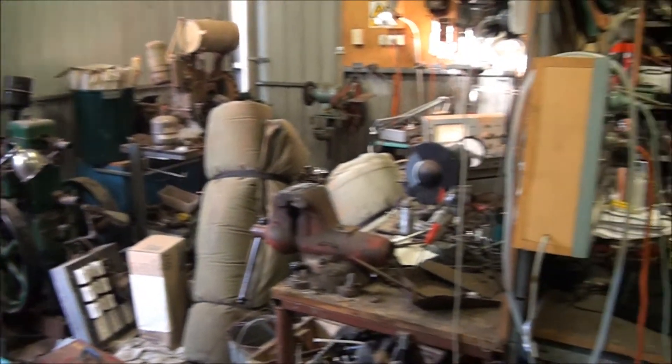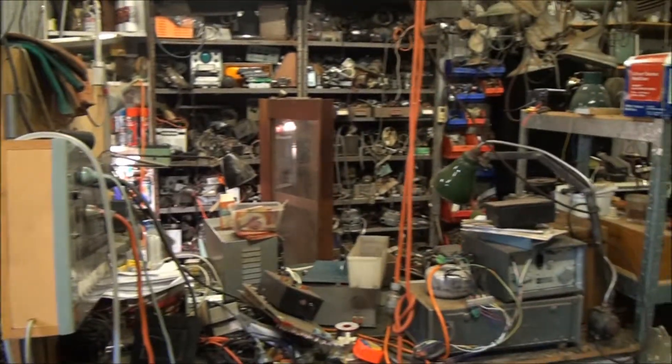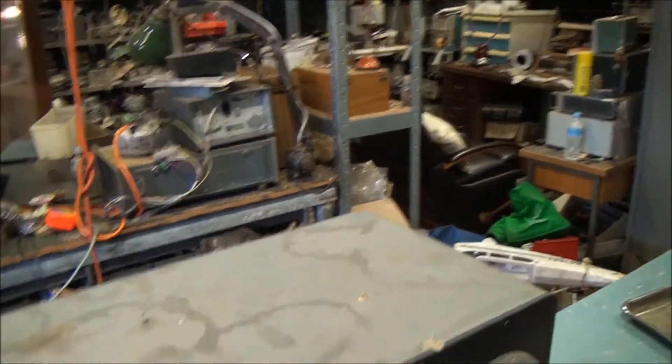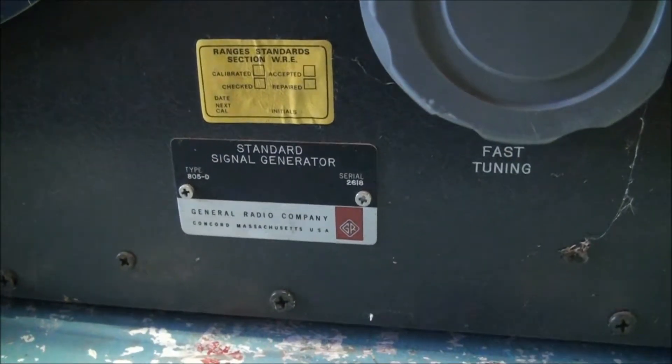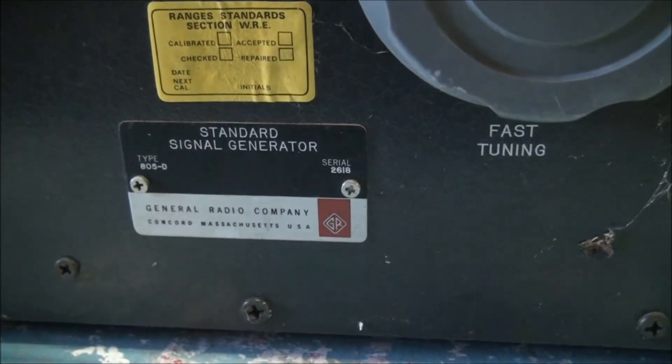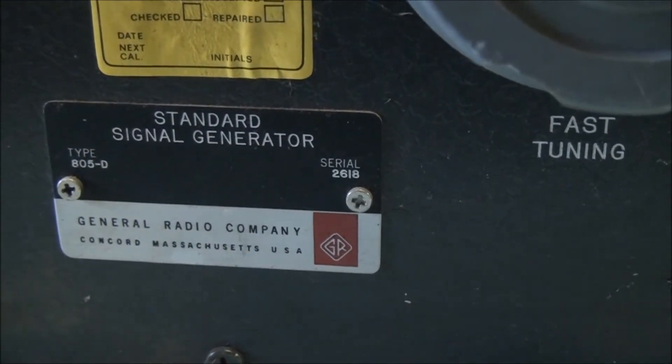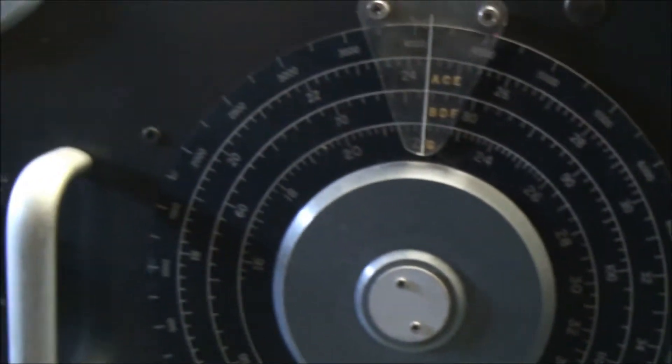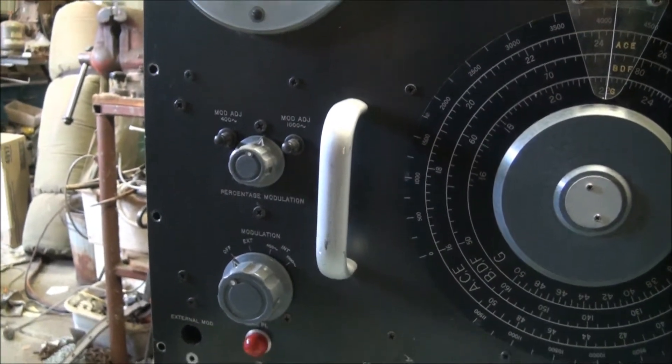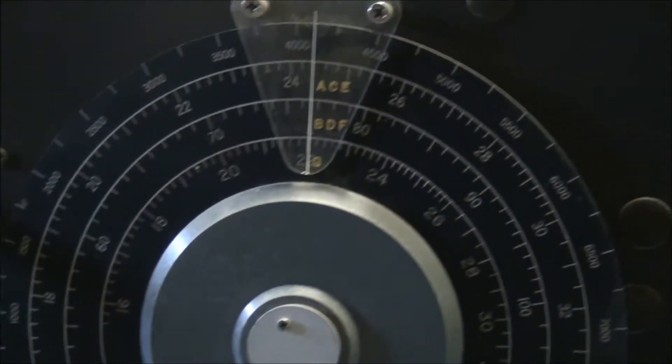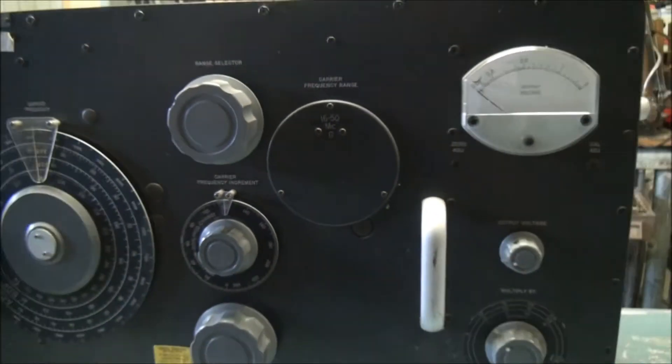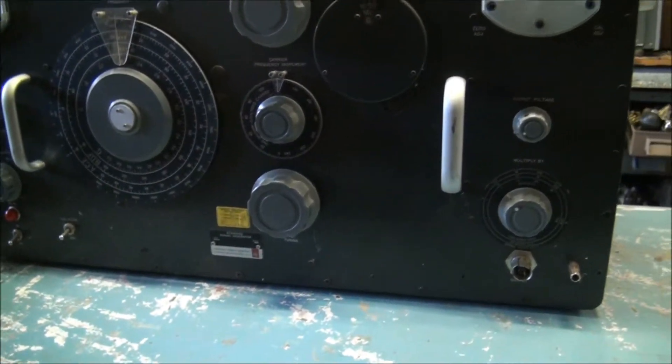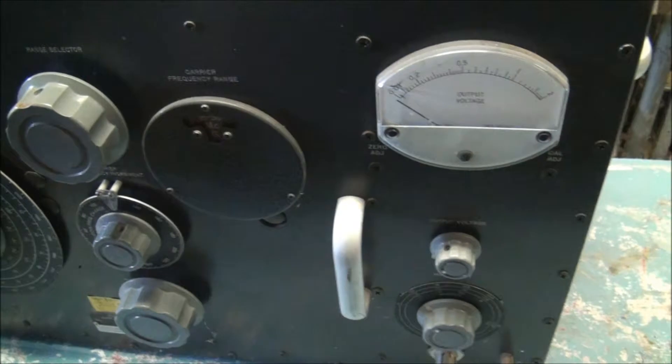Anyway, can never have a shed big enough because it's always going to get filled up eventually. This signal generator is an RF signal generator, a standard signal generator made by the General Radio Company, Massachusetts, USA. 240 volts. It has 400 or 1000 Hertz modulation and it's useful for alignment of radios and things like that.